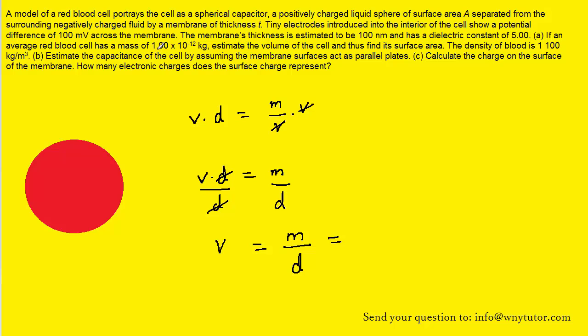We could then plug in the given quantity of the mass, 1.00 times 10 to the minus 12 kilograms, and divide that by the stated density of blood, which was 1,100 kilograms per meter cubed. We could then pick up our calculators and type this in. And when we do that, we get approximately 9.09 times 10 to the negative 16. The kilograms will cancel out. This meters cubed will actually end up in the numerator, so we have the volume in terms of meters cubed. And so this would be the correct answer to the first part of part A.